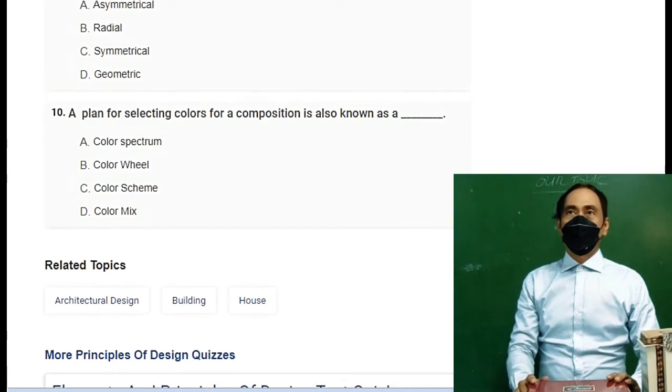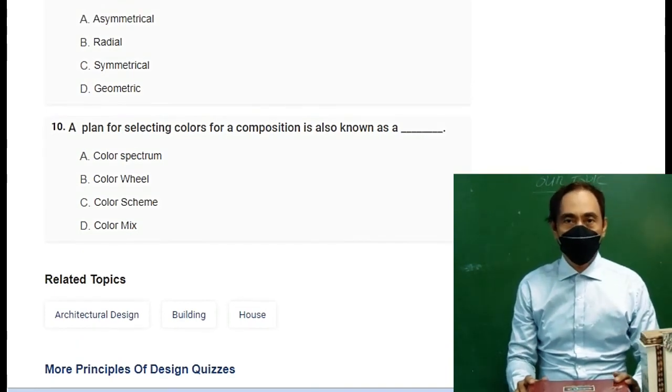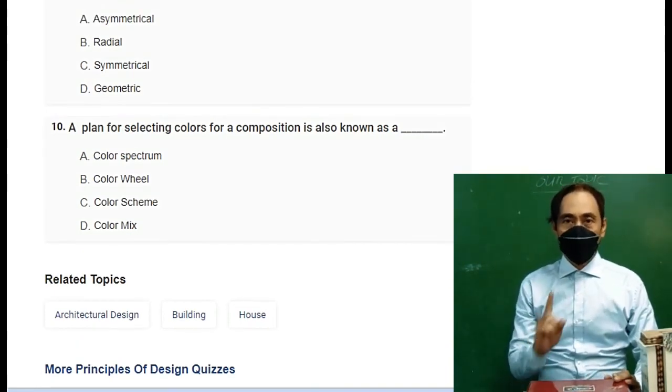Number 10, the last question: A plan for selecting colors for a composition is also known as A. color spectrum, B. color wheel, C. color scheme, D. color mix.